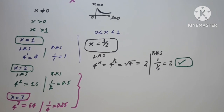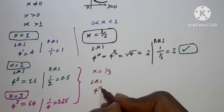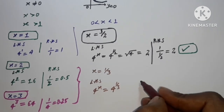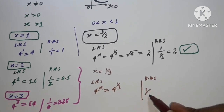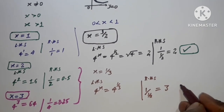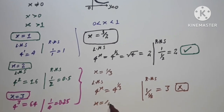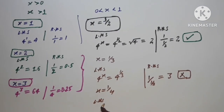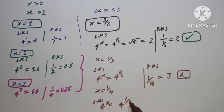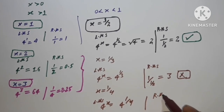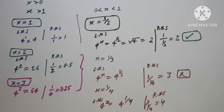Considering x equal to 1/3: LHS is 4 to the power 1/3, and on the RHS, 1 upon x is 1 upon 1/3, giving 3 — so it is not equal and does not apply. Similarly, for x equal to 1/4: LHS is 4 to the power 1/4, and RHS is 1 upon 1/4, giving 4 — also not equal. So only x equal to 1/2 works.